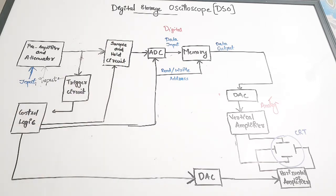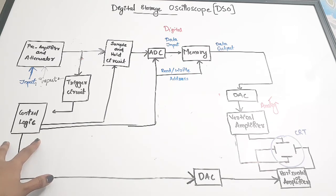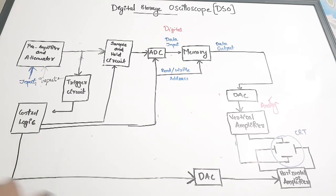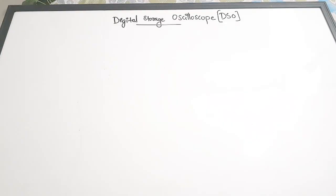This is all about the digital storage oscilloscope. We have discussed all the basic blocks - how the signal gets stored, how it gets digitized, how the time base is generated. The control logic can be a microcontroller or microprocessor which generates the time base. Next we are going to see some important questions from the DSO.